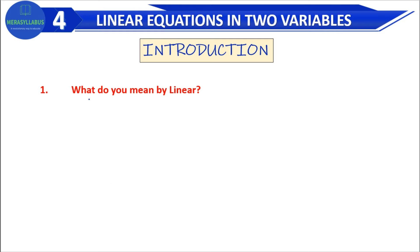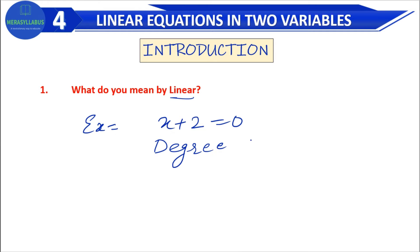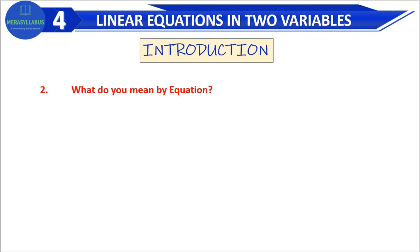First thing: what do you mean by linear? In the last class I told you — for example, we have the equation x plus 2 is equal to 0. Here, is this linear, square, or cubic? We can find out from the variable x, whose power is 1. For a linear equation, always remember that the degree of the equation will be 1 — that is the meaning of linear.